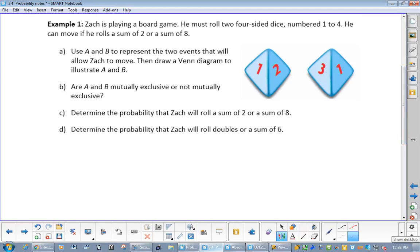Now, Zach is playing a board game. He must roll 2 4-sided dice, numbered 1 to 4. He can move if he rolls a sum of 2 or a sum of 8. So again, definitely a diploma question. The first question asks, use A and B to represent the two events that will allow Zach to move. Then draw a Venn diagram. So what would A be? What does he need to be able to get? Sum of 2. What would the two dice be? 1, 1. That's the only thing that will get him to move. Or B, what's the other one? 4, 4. Nothing else is going to get that.